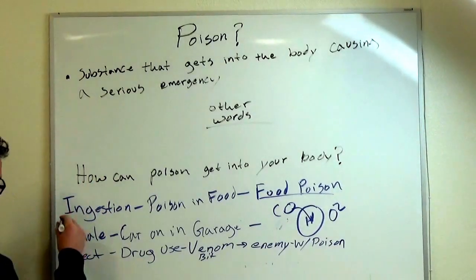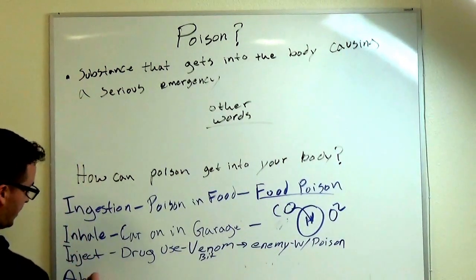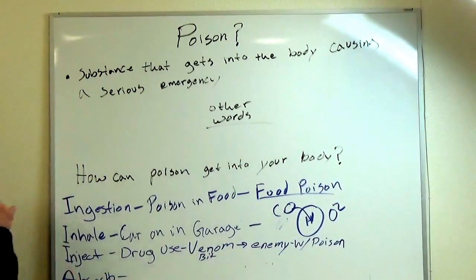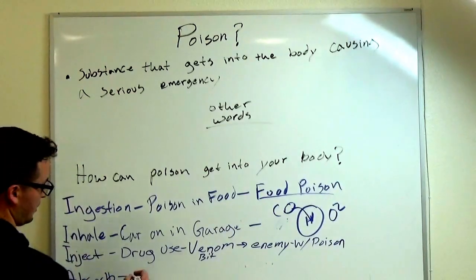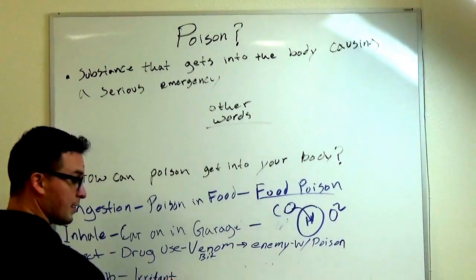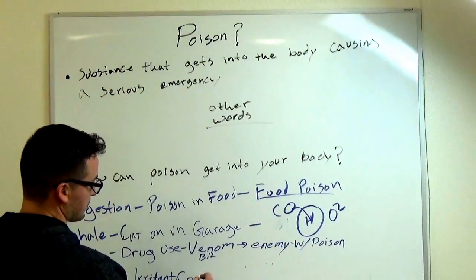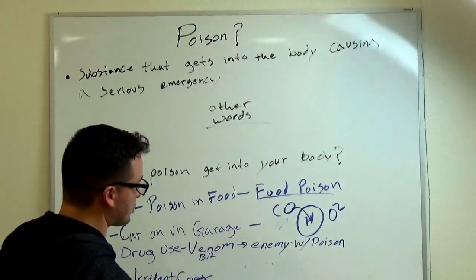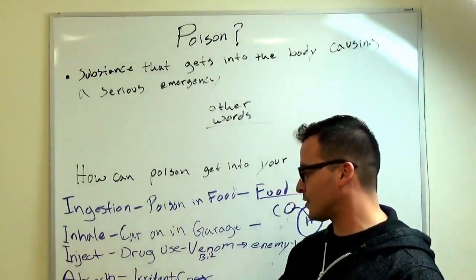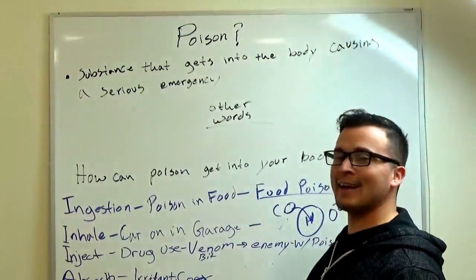The other one is going to be absorbed, so it could be absorbed by the body. This one is usually an irritant or a corrosive. It's just going to absorb through the skin and cause damage on the way down. That's also considered a poison.